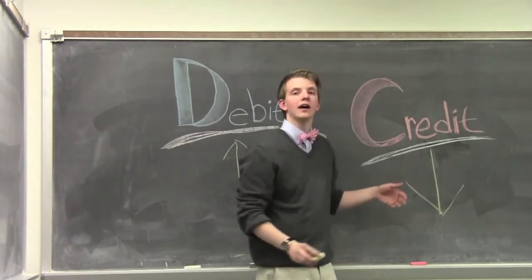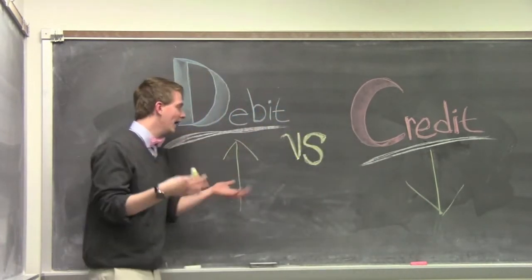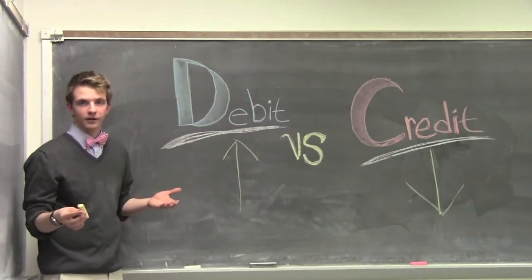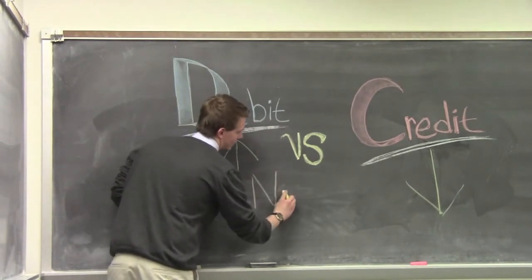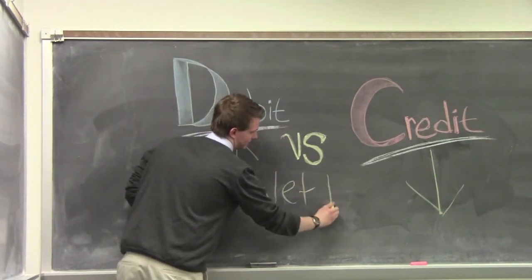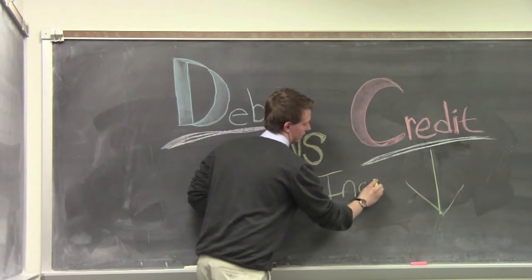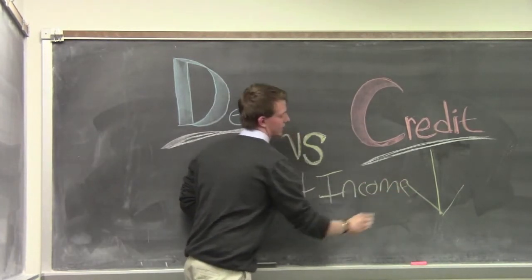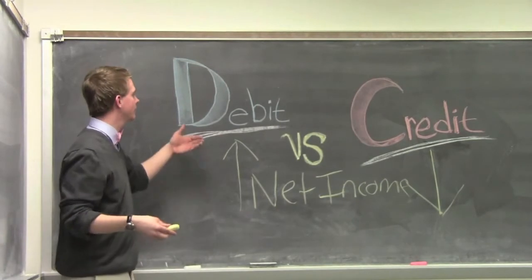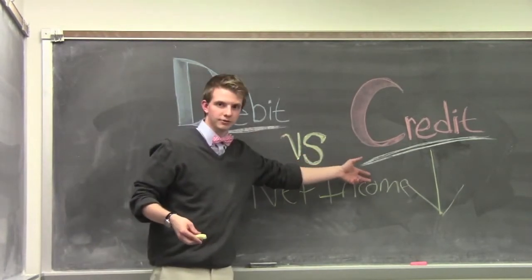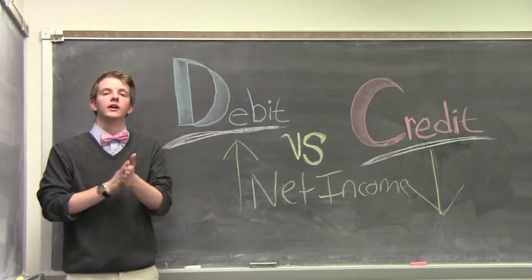Now if you were to add these two things together, this is where you would get net income. Net income is the total amount of money that has come in and out of your business.